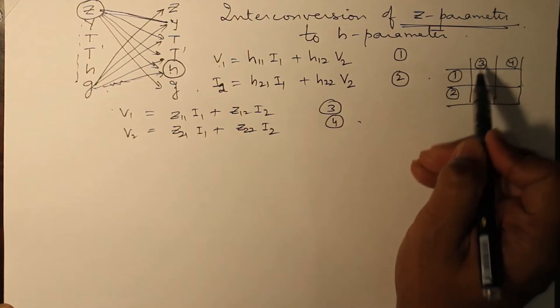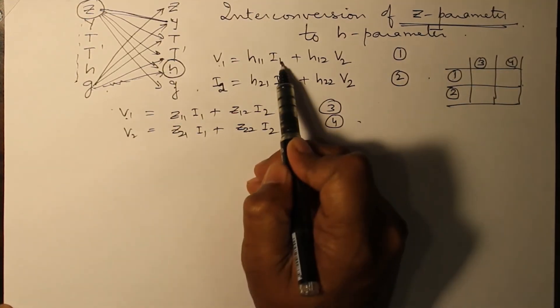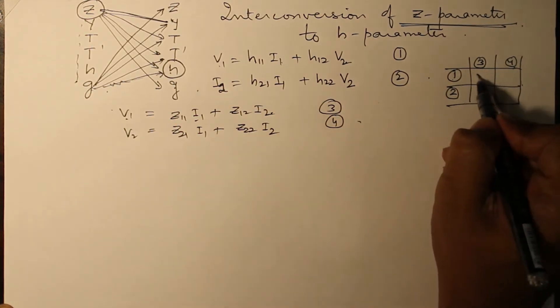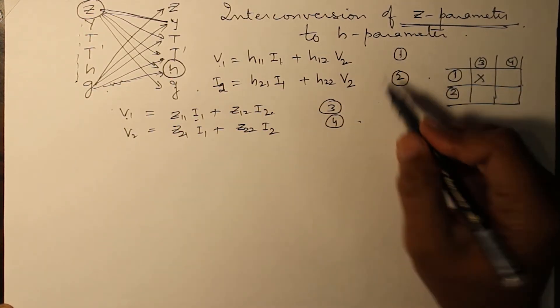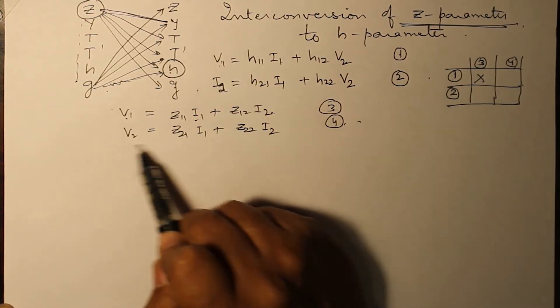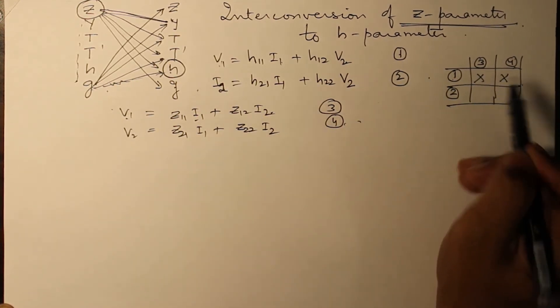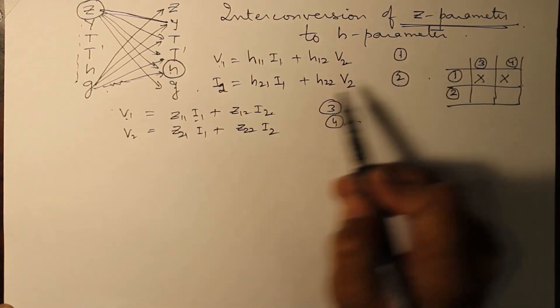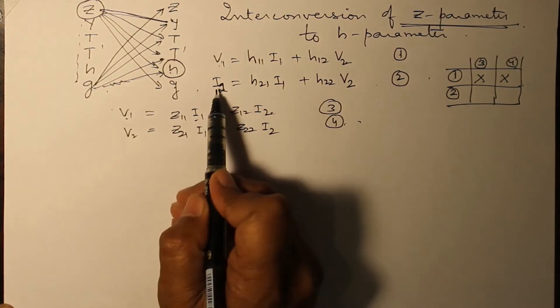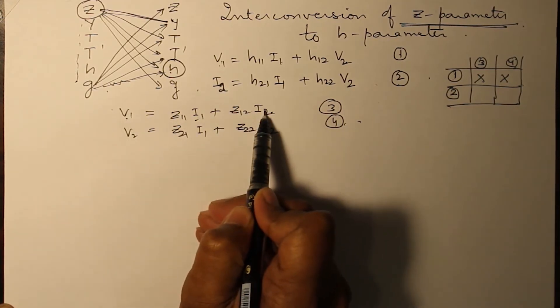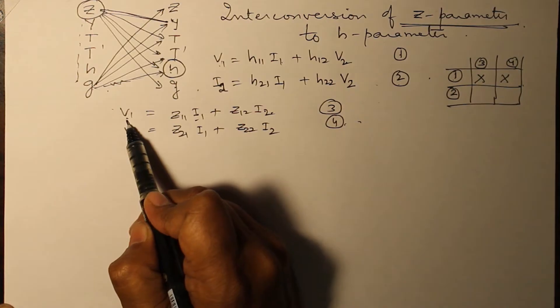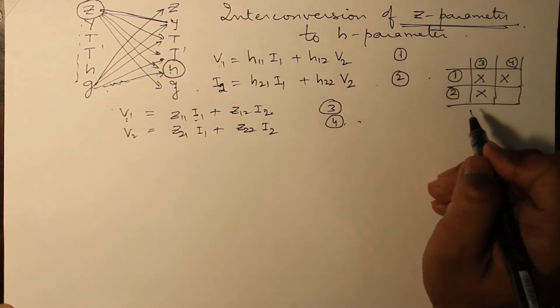See, here one and two, and here three and four. Compare the variables V1, I1, V2, I2 in these equations. For example, we take one and three: V1, V1, I1, I1, but here we have V2 and here we have I2. Put a cross here. Now compare one with four: V1 not present, cross. Now we compare two with three.